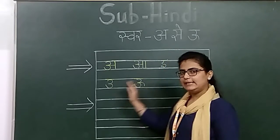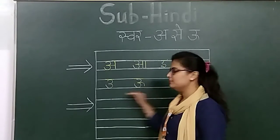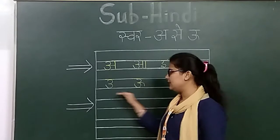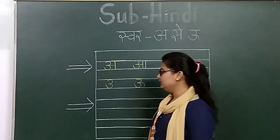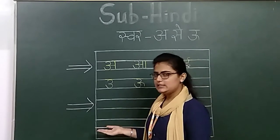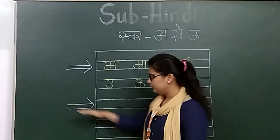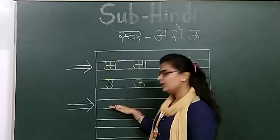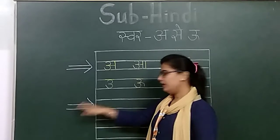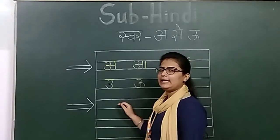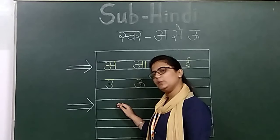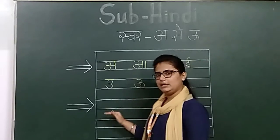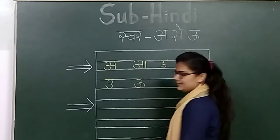We have to skip one line, then we will start the second time from the hash sign. When we have an arrow, then we will start again. Same, same we have here. Okay, so let's start.